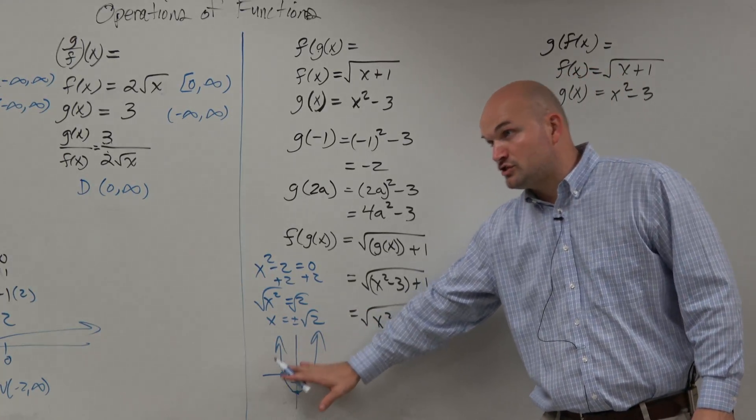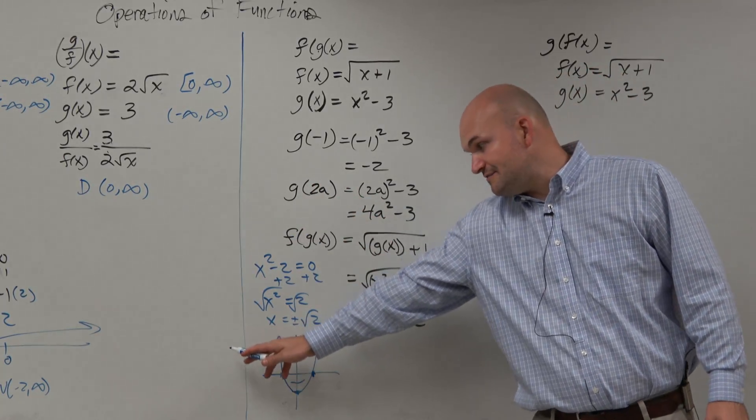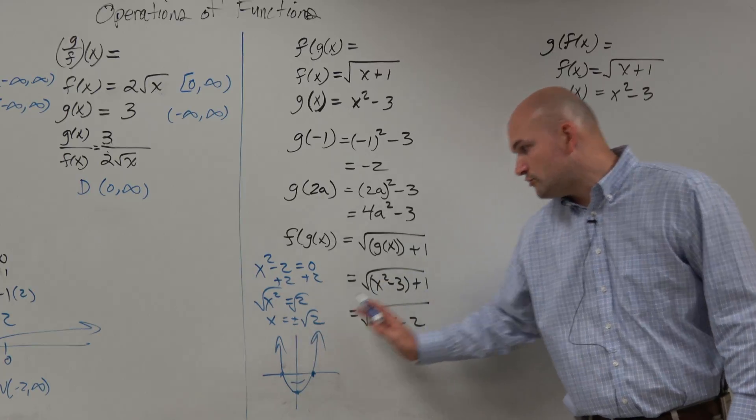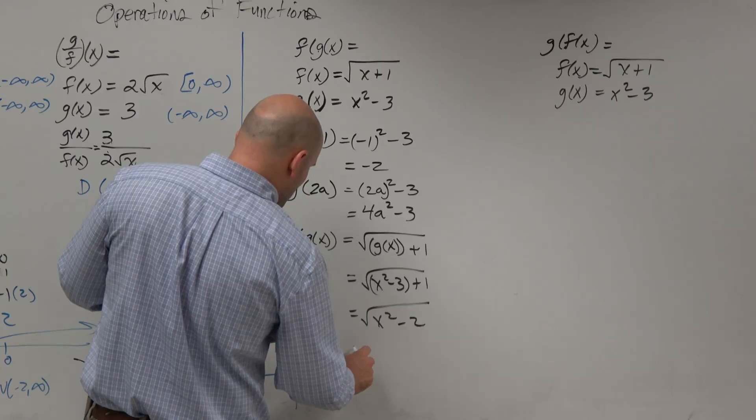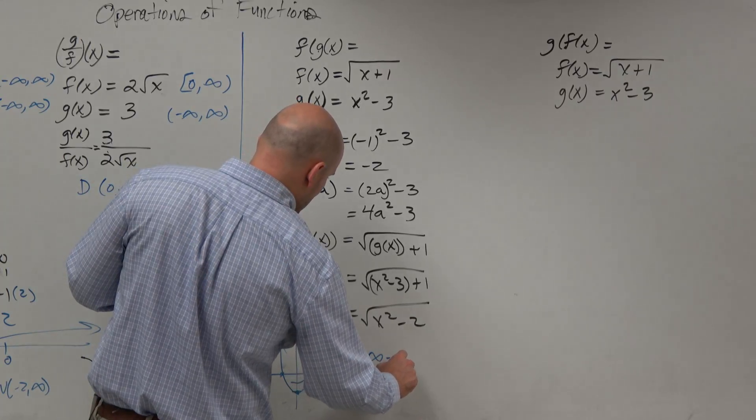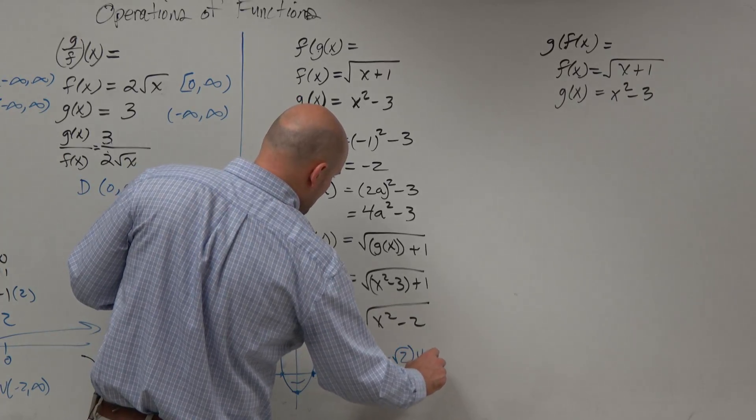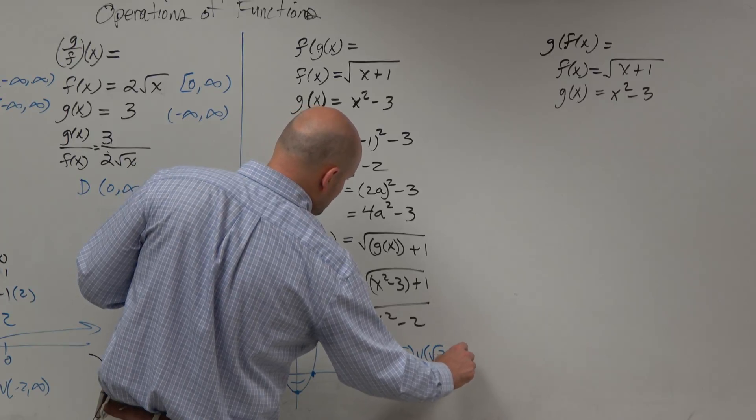So you can see that this graph is greater than 0 to the left of negative square root of 2 and to the right of square root of 2. A little more advanced than I was planning on doing for this problem, but the domain here is negative infinity to negative square root of 2, union, square root of 2 to infinity.